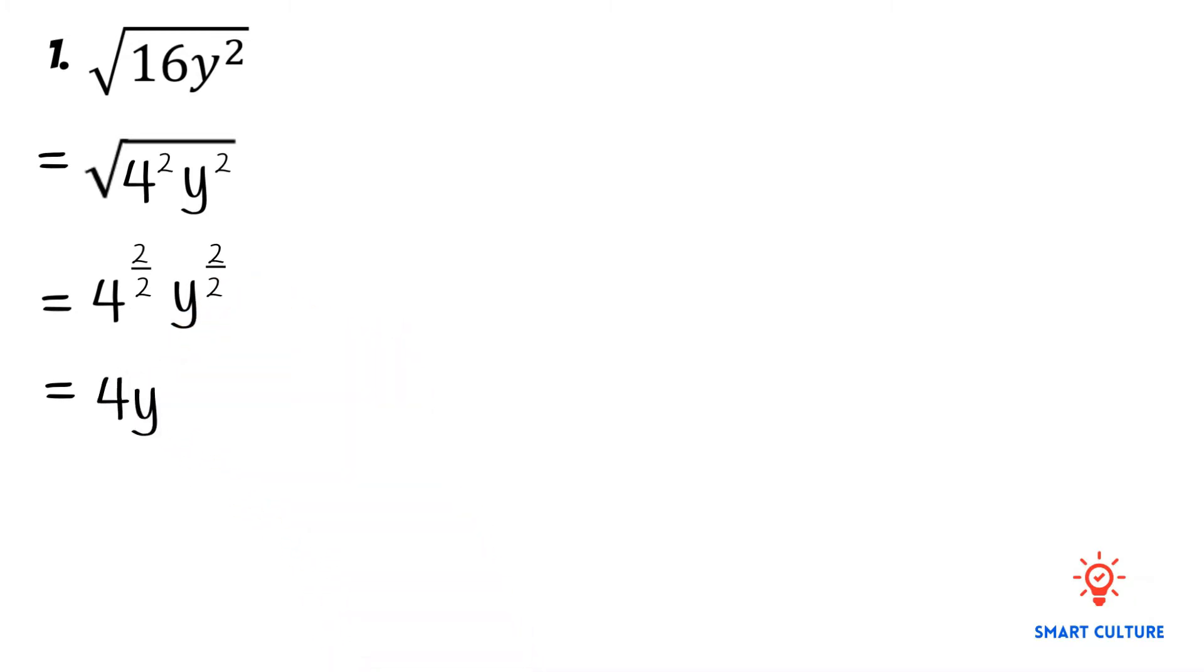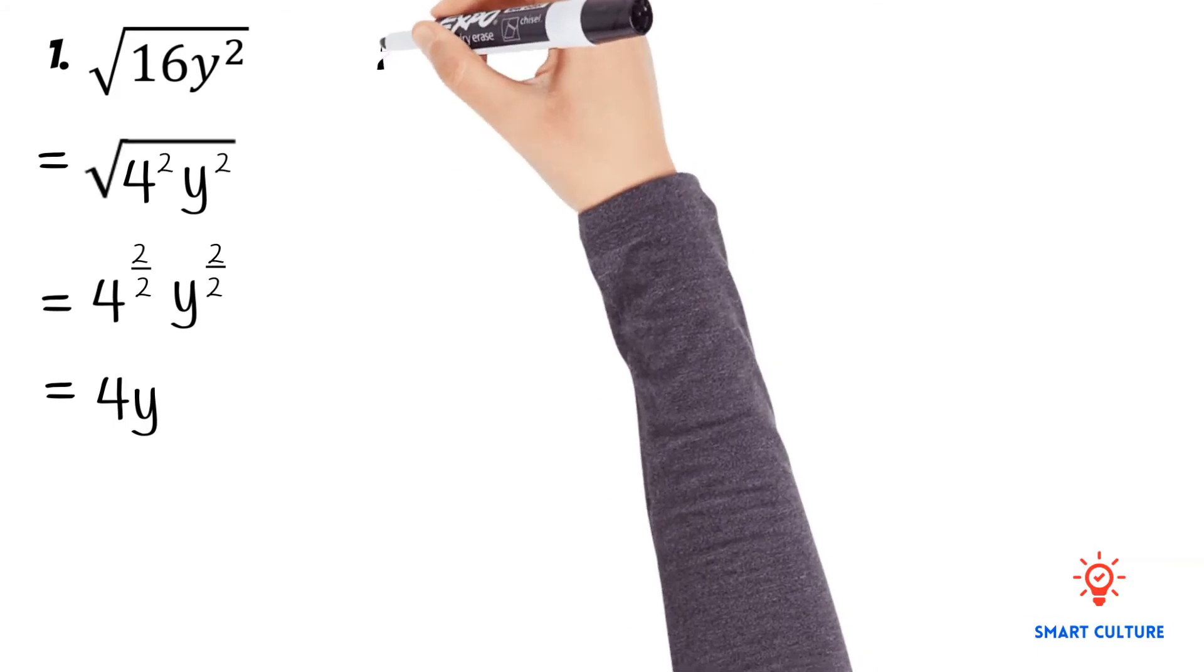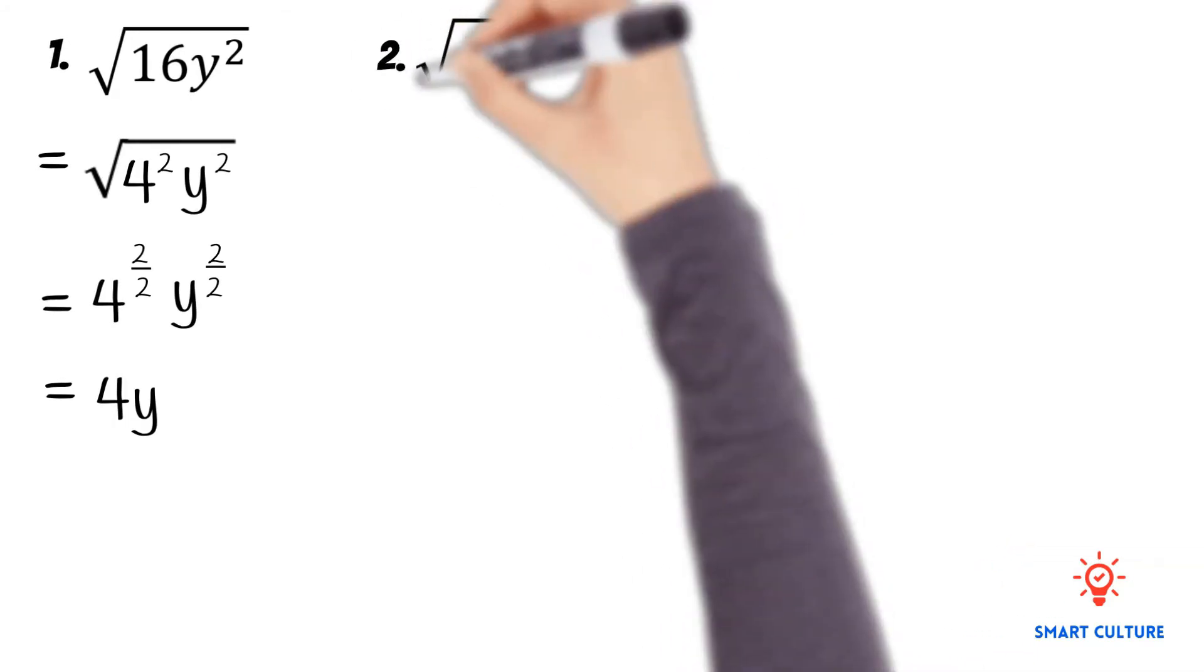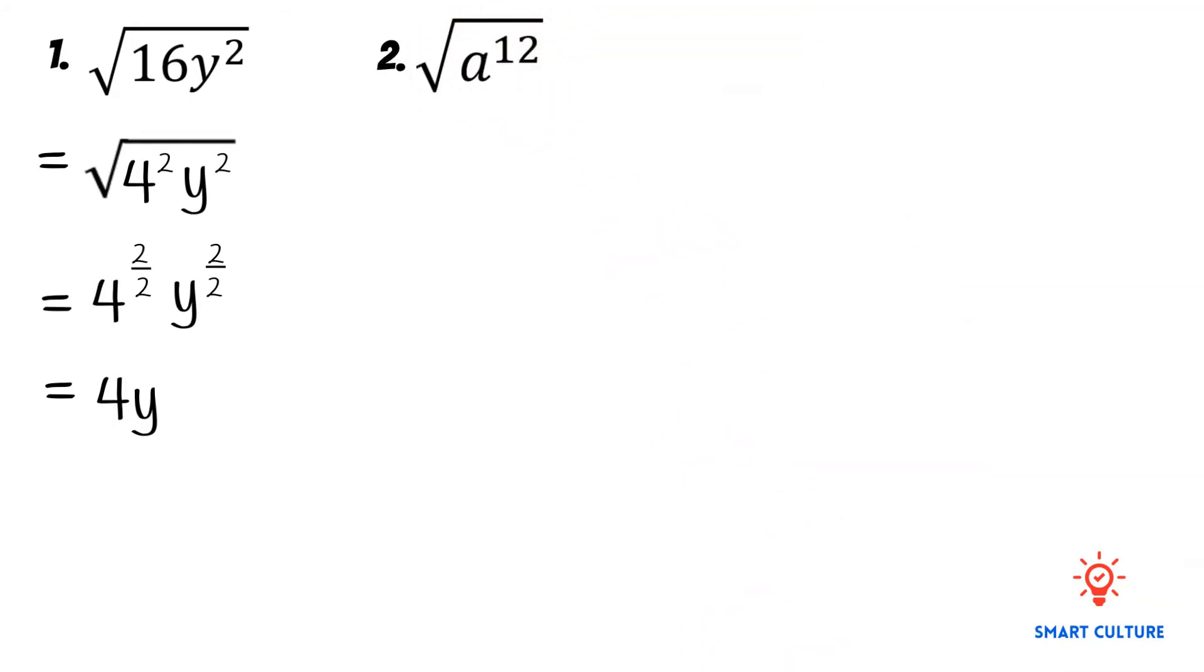2 divided by 2 is equal to 1. So the exponent of 4 will be 1 and the exponent of y will be 1 as well. So the final answer will be equal to 4y. Let's take a look at another example.